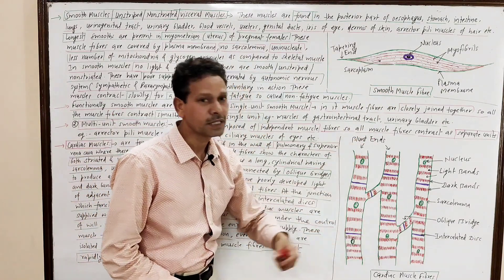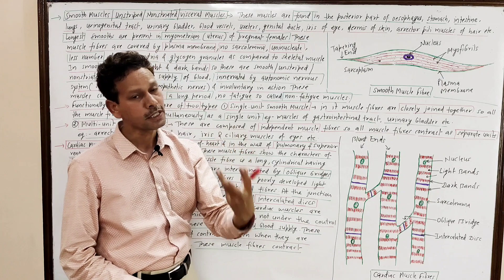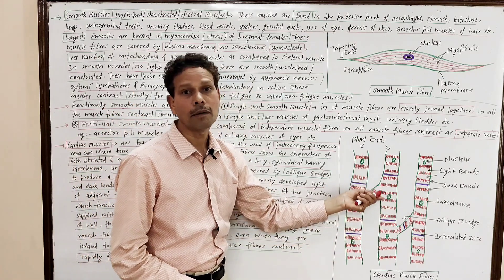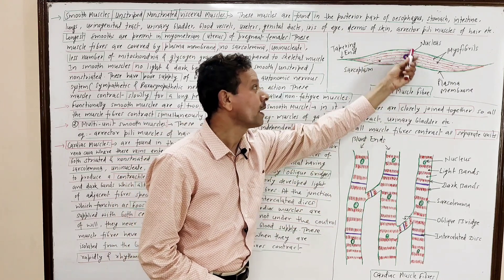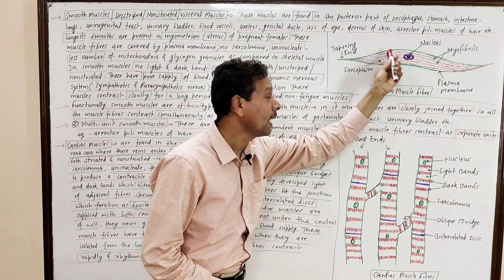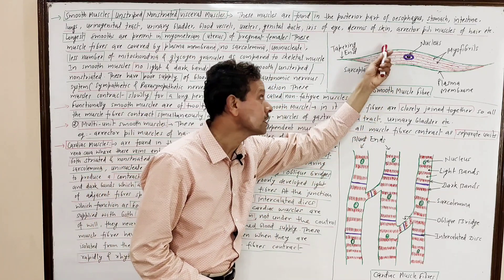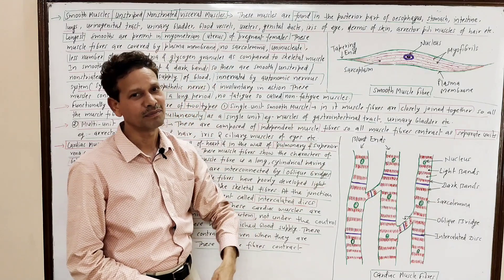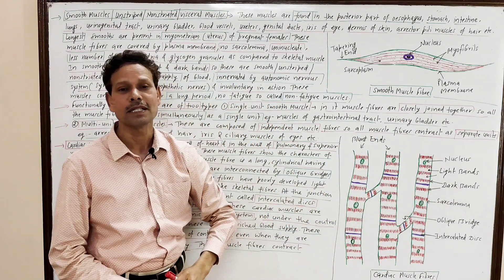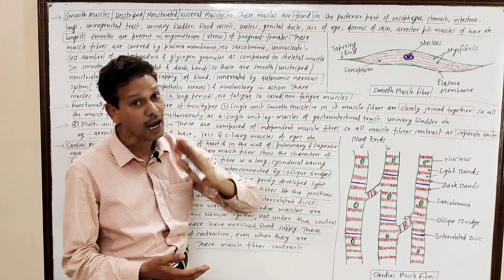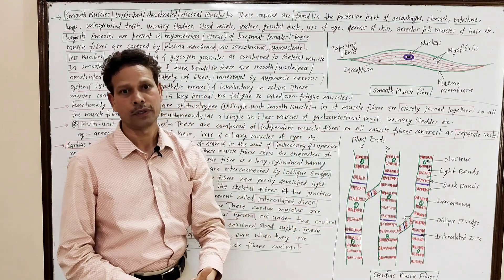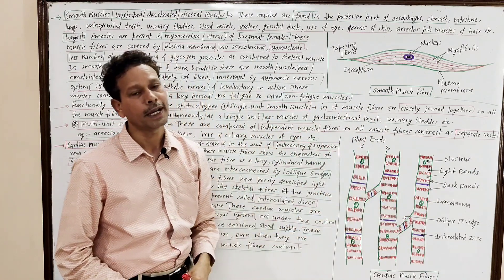In cardiac muscles, the blood supply is enriched — abundant blood supply — like skeletal muscles. In smooth muscles, blood supply is poor, number of mitochondria is less, and glycogen granules are few. But in cardiac muscles, like skeletal muscles, blood supply is enriched, number of mitochondria is more, and energy granules are abundant.